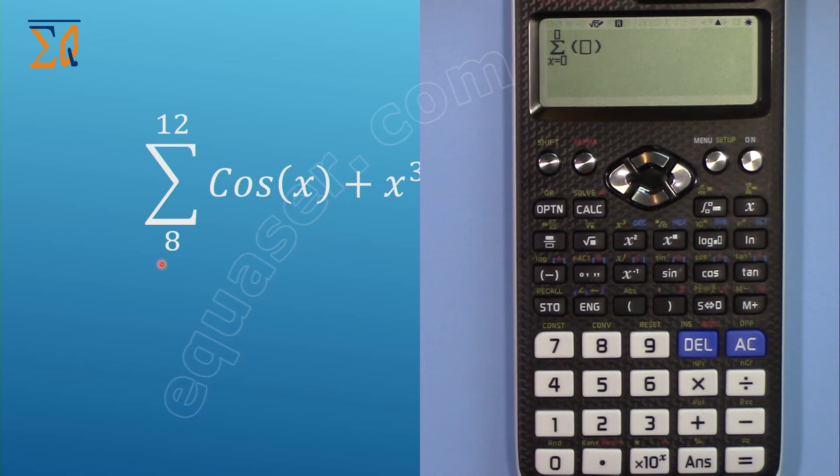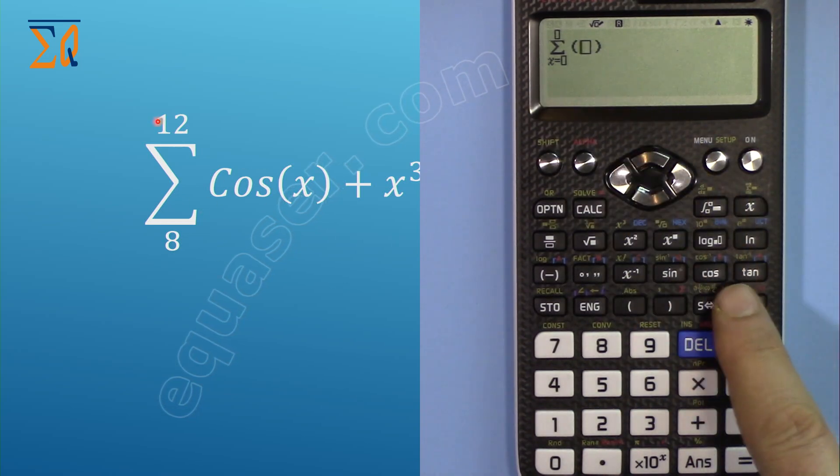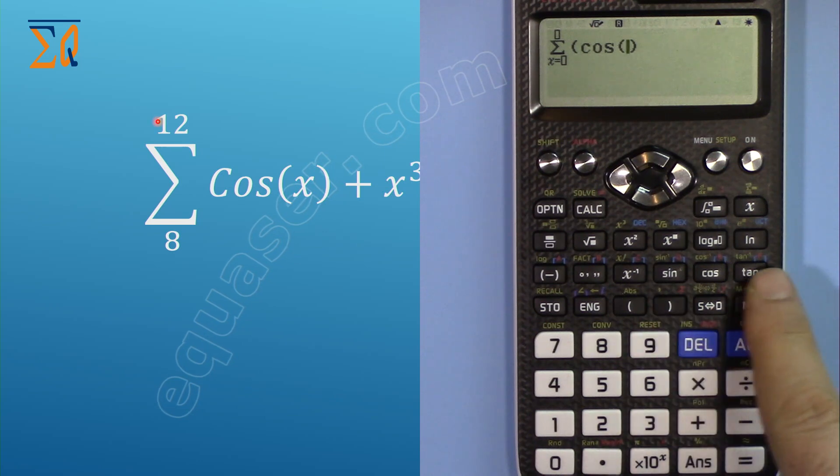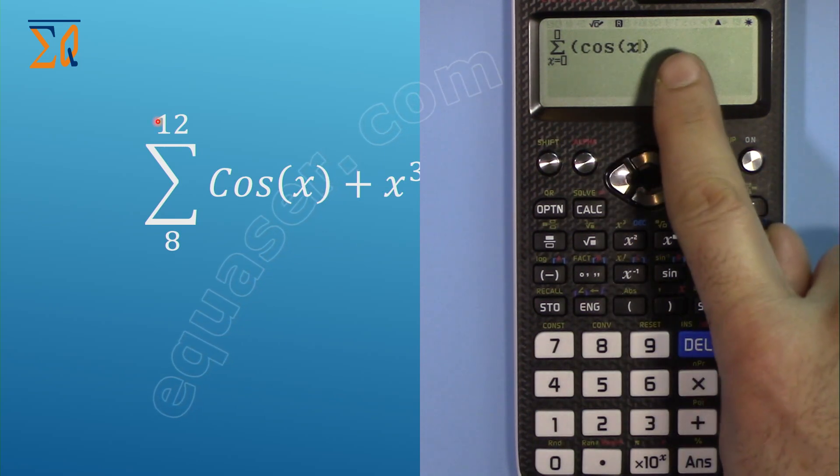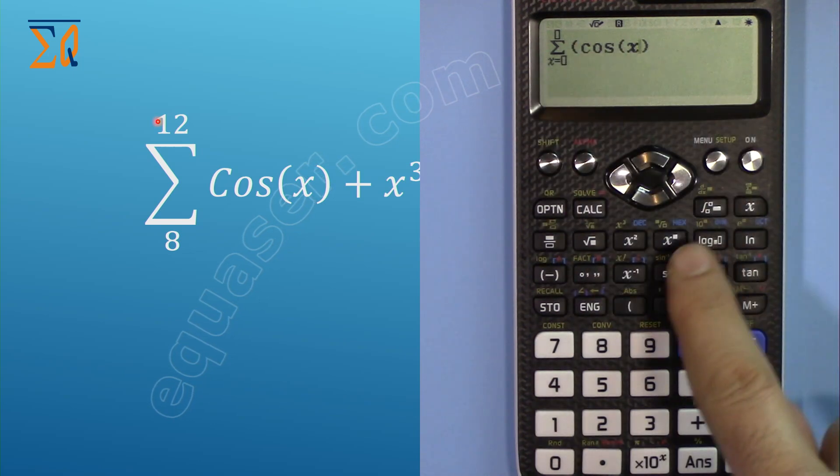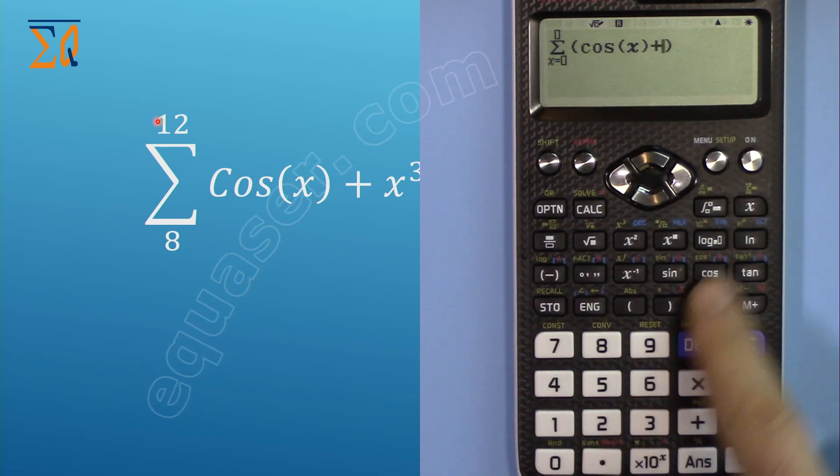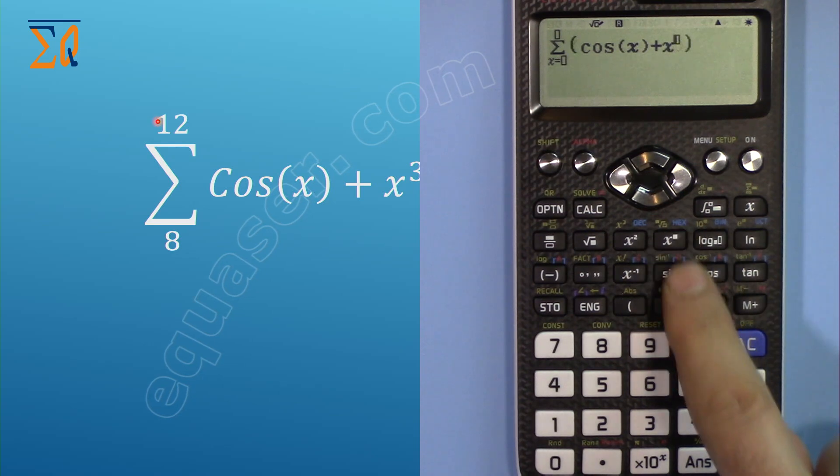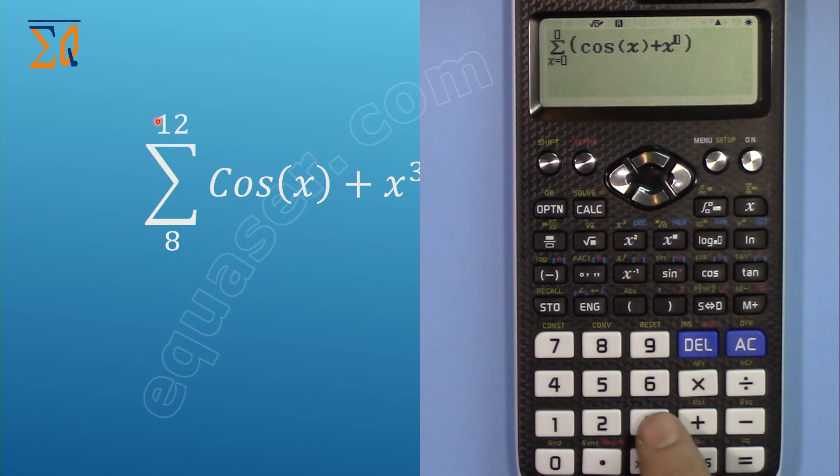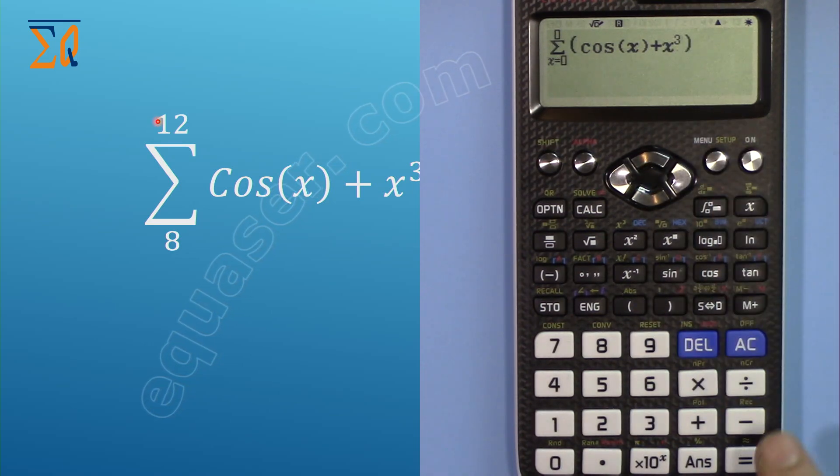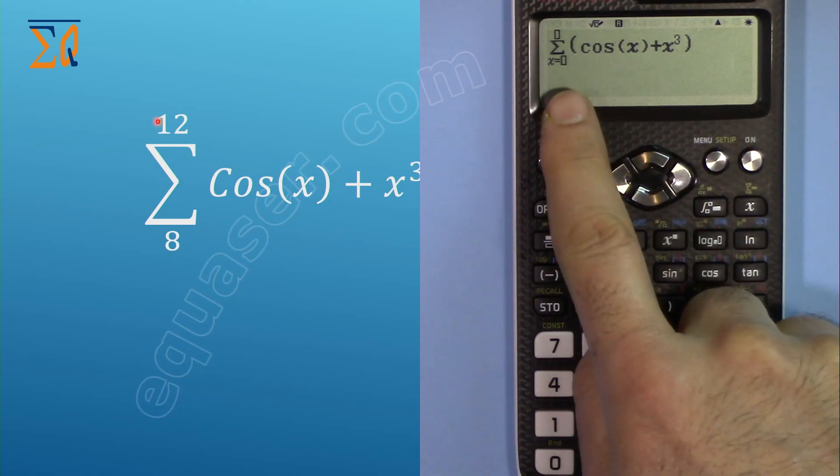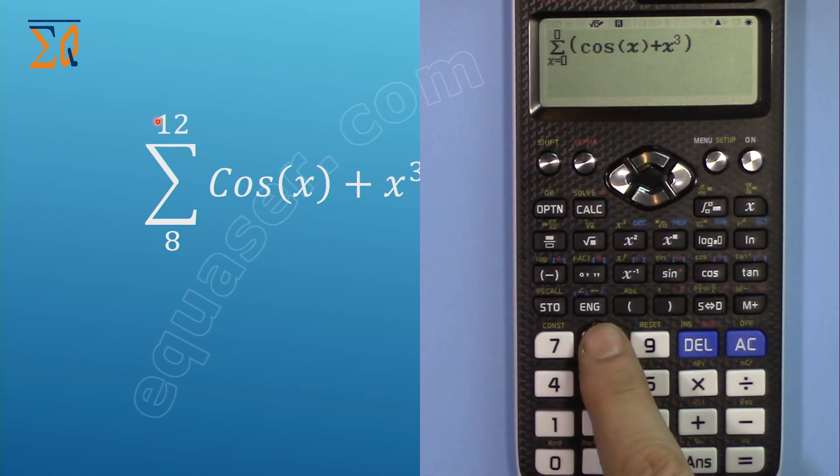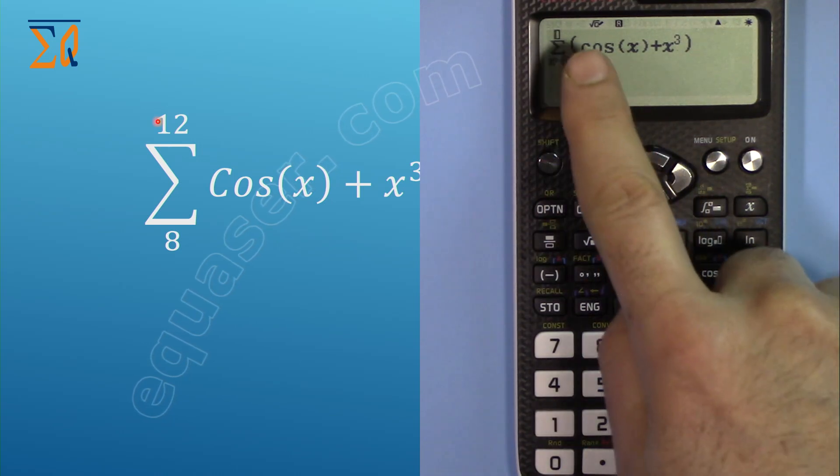Enter cosine of x, close the parenthesis, plus x to the power 3. Move with the right arrow to the lower bound, which is 8, then move to the right for the upper bound and enter 12. Press equal and that is the value.